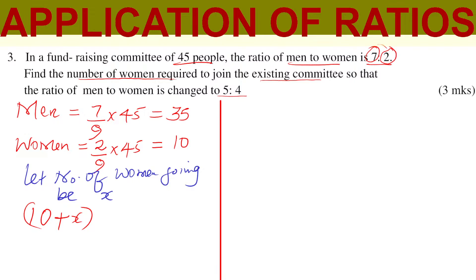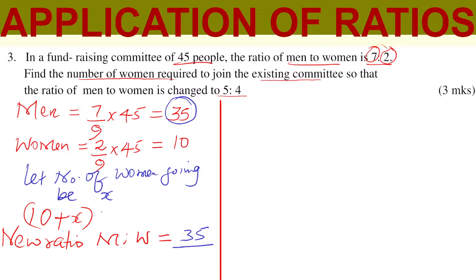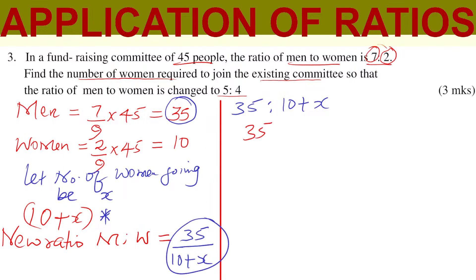The men will remain the same, so the new ratio of men to women will be represented by men, who are not going to change, remaining at 35. The women are changing after X joined, so this will be 10 plus X. You can write this ratio as 35 to (10 plus X). But the ratio of men to women, after these women joined, changed to 5 to 4. So therefore, 35 divided by (10 plus X) should equal the new ratio, which is 5 to 4.